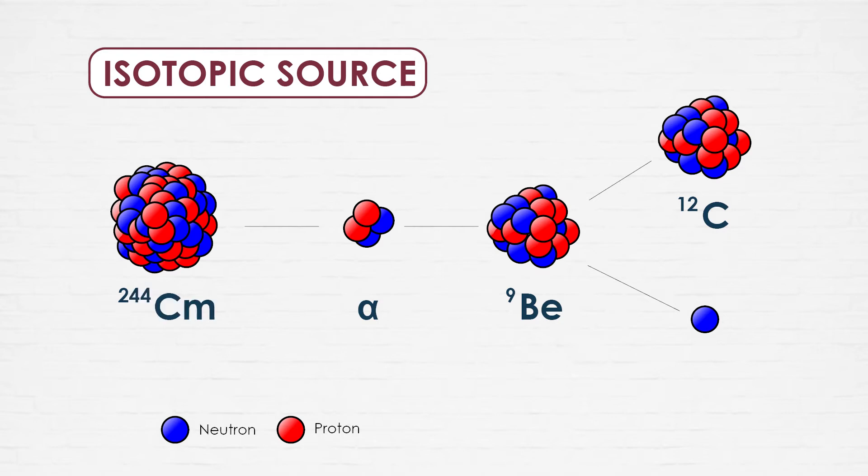radium-beryllium, curium-beryllium and americium-boron. Kinetic energies of neutrons produced by isotopic sources grow from tens of keV up to about 10 MeV.